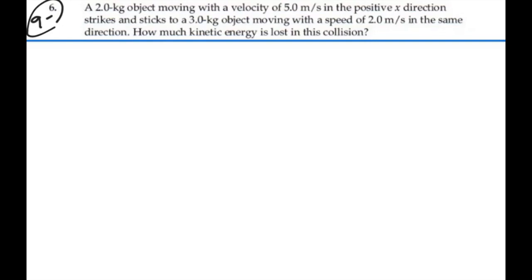We have mass 1, which is 2 kilograms, moving to the right with a speed v1 initial equal to 5 meters per second, about to collide with mass 2, which is 3 kilograms. It has a speed in the same direction, so v2 initial is also a positive 2 meters per second.